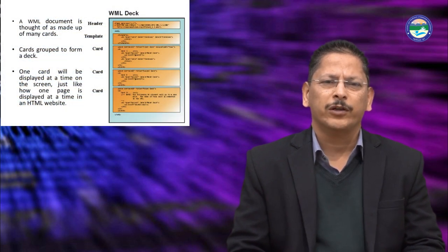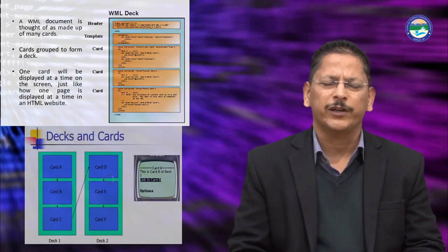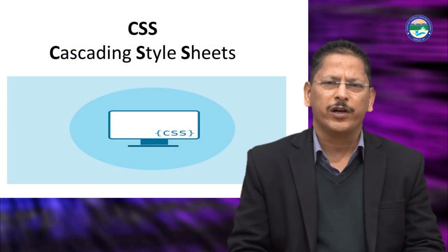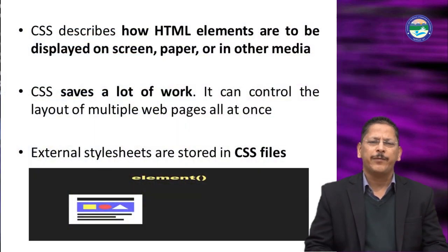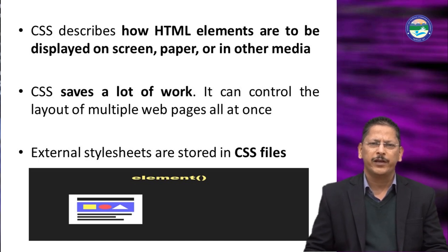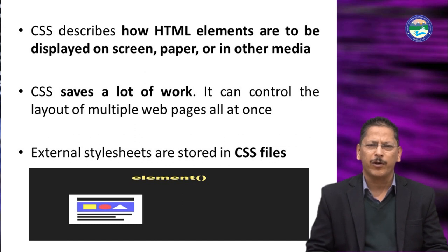CSS — Cascading Style Sheet — describes how HTML elements are to be displayed on screen, paper, or other media. HTML is used to display pages, images, and video on a computer screen, but CSS is specifically designed to save a lot of work. It can control the layout of multiple pages all at once. Suppose we have a long series of pages — we can format each page accordingly in a single formatting. External style sheets are stored in CSS files, and we can also use internal or inline style sheets.